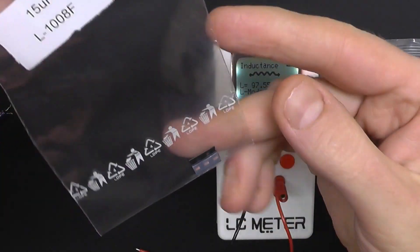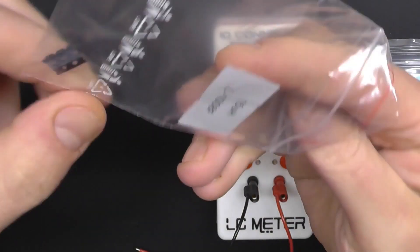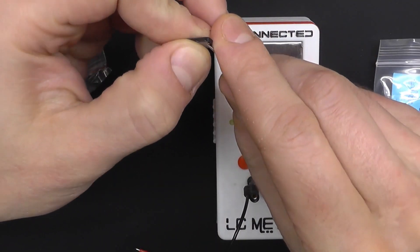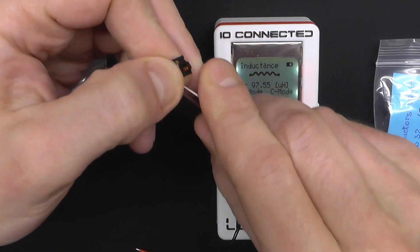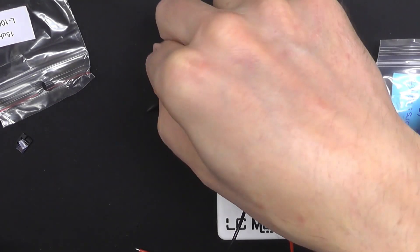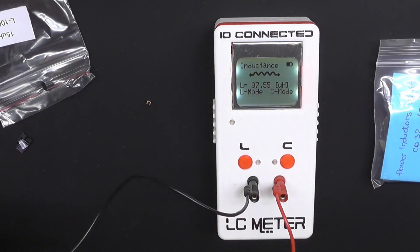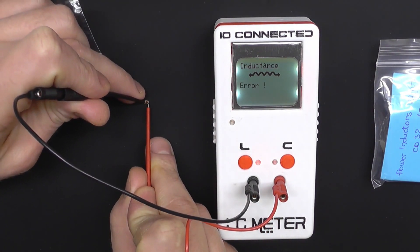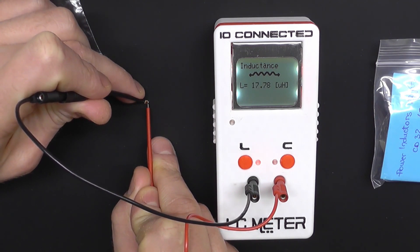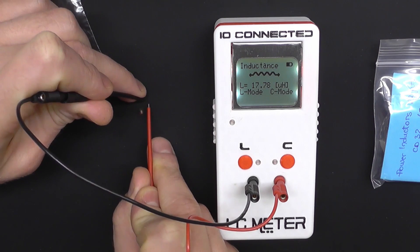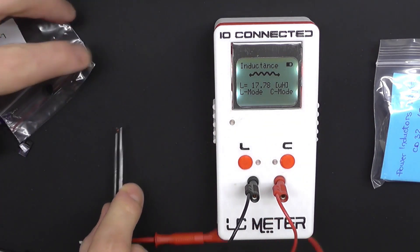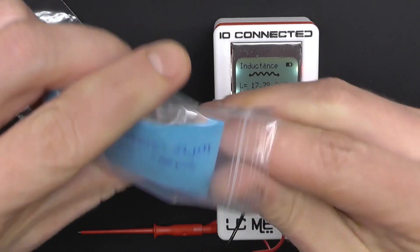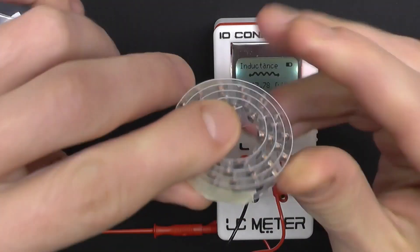The next one is a 15 microhenry inductor. Let's make sure you're not touching any exposed terminals or the tips of the probes while measuring. Let's measure these ones. Let's pretend we're looking for an inductor as close as possible to 20 microhenry.